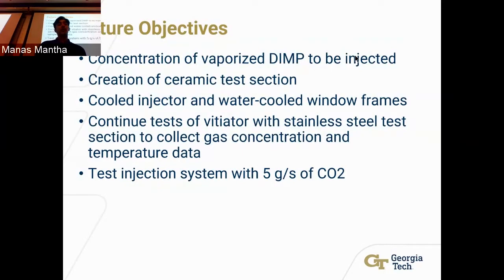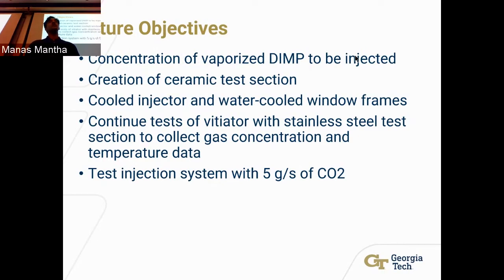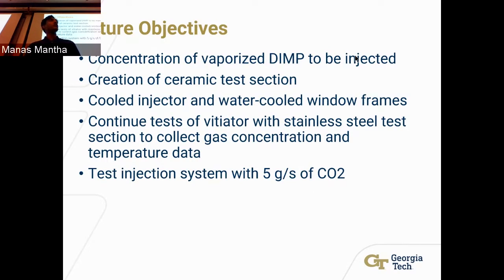Future objectives include determining the concentration of DIMP that needs to be injected, which comes from testing with the other gases — CO₂, argon, and air. We also want to create the ceramic test section, cooled injector plates, and water-cooled window frames to ensure measurements are unbiased. As of now, the test section is a stainless steel section, which has heat losses but is being used to test the vitiator and collect gas concentration and temperature data. In the near future, we hope to test the injection system with around 5 grams per second of CO₂ mass flow rate by the end of the semester.